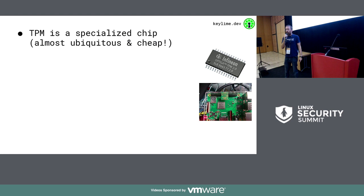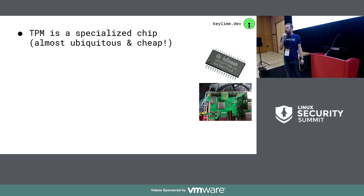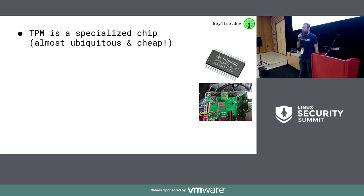A TPM is a specialized chip — they're almost ubiquitous. A lot of boards come with them already on. If not, they're pretty simple to retrofit. That bottom-right image is a Raspberry Pi 3 with a TPM chip on the GPIO board — it cost me about 20-30 euros. A lot of server providers already have them on the board, and they're also turning up in devices and the automobile industry.